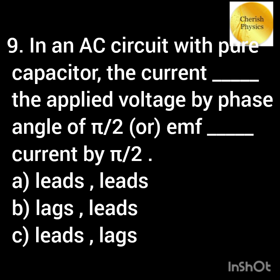In an AC circuit with a pure capacitor, the current dash to the applied voltage by pi by 2, or the EMF dash to the current by pi by 2.